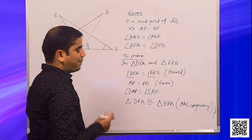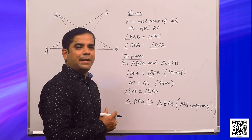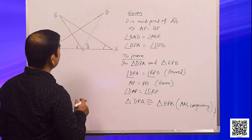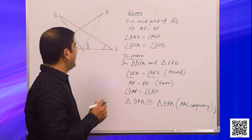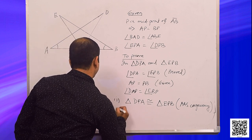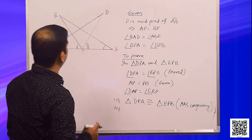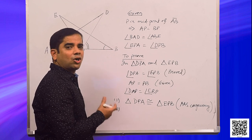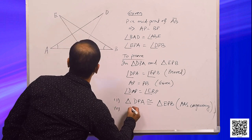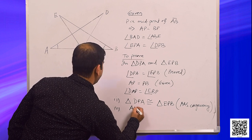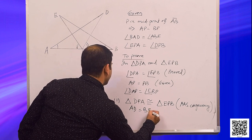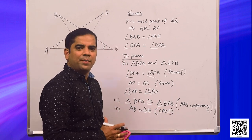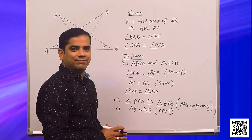We can clearly say that triangle DPA is congruent to triangle EPB by AAS congruency. We have proved that triangle DAP is congruent to triangle EPB. AD is equal to BE, as these are the corresponding sides of the congruent triangles. I hope you have understood this clearly.